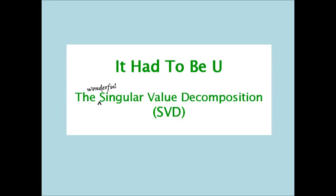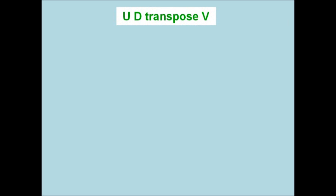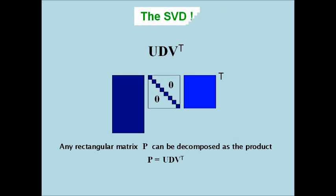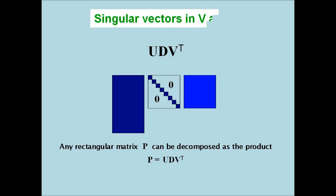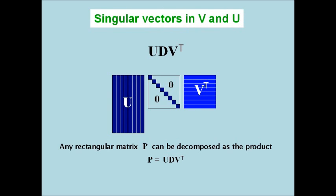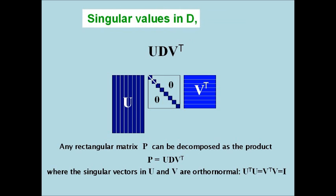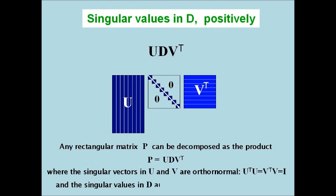It had to be U — U D transpose V. I looked all around and finally found the SVD. Singular vectors in V and U, orthonormal too. Singular values in D, positively,